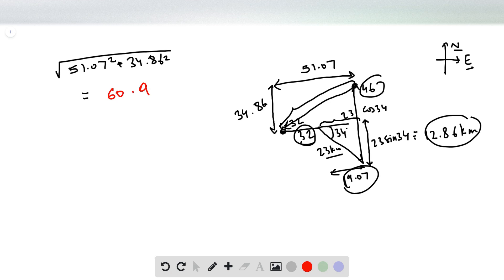Now we also need to find the direction in which we need to go. So if we find out this angle, which is theta, we can see that tan theta is equal to opposite side divided by adjacent side.